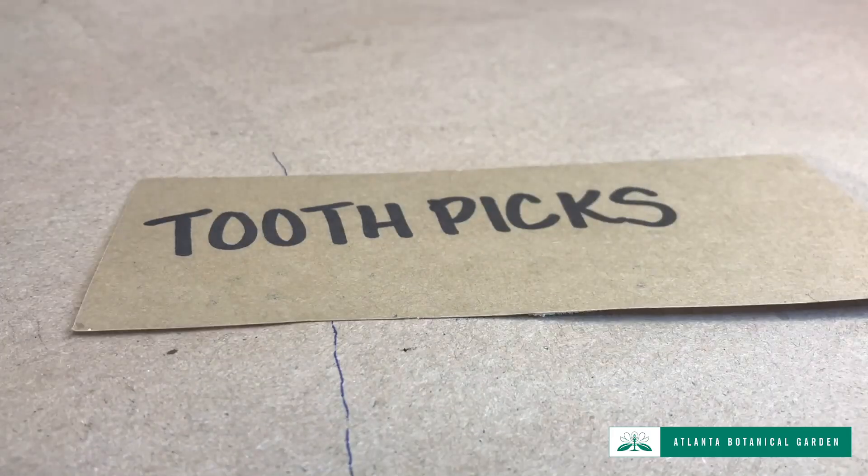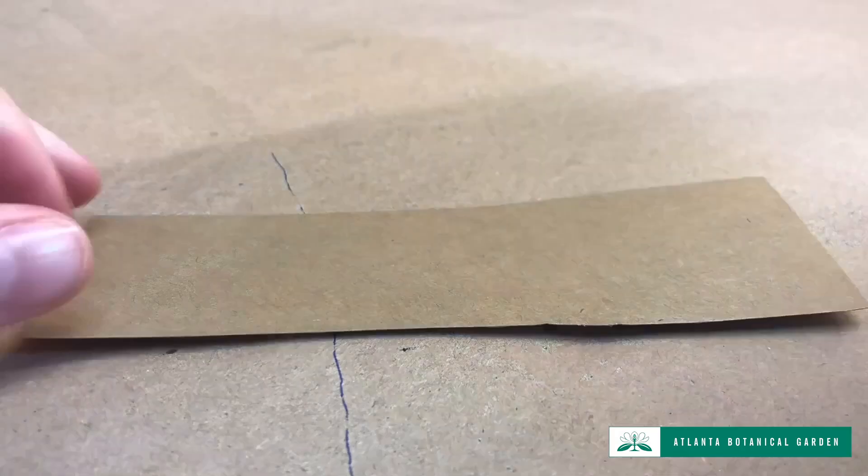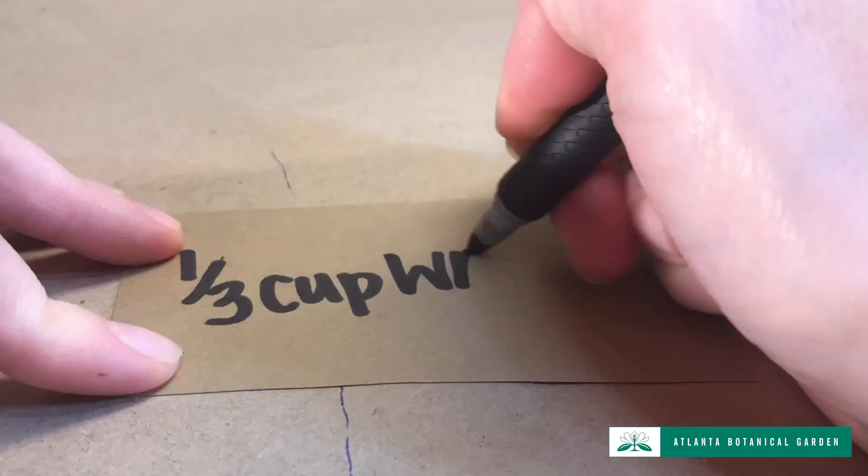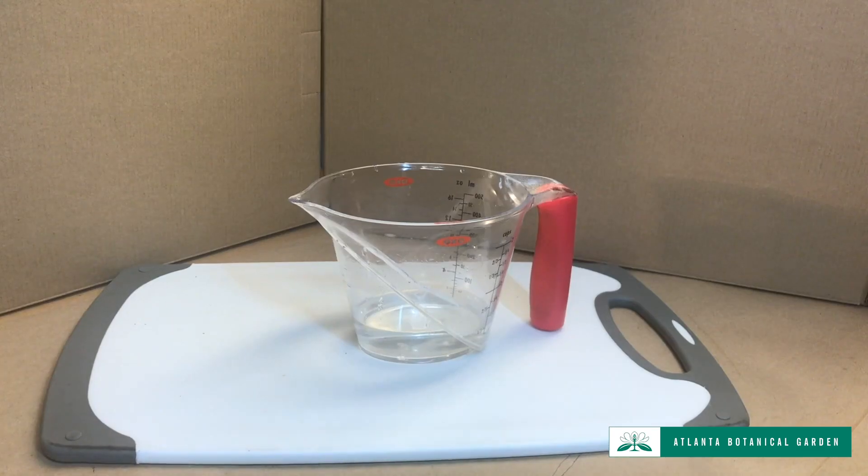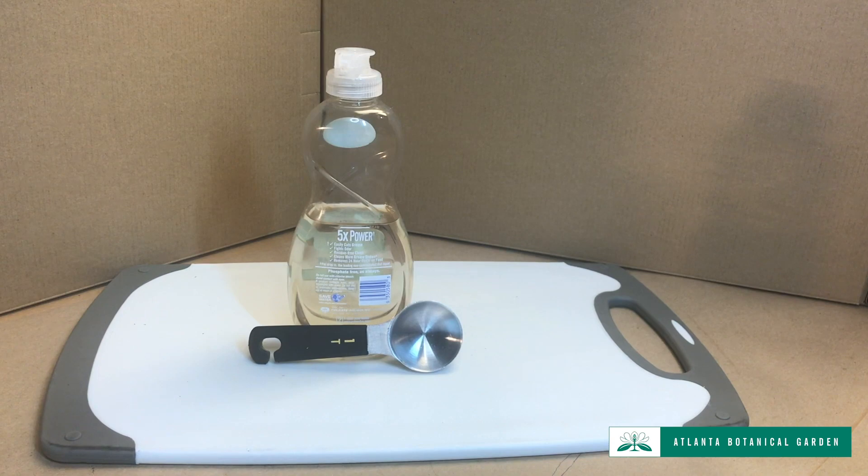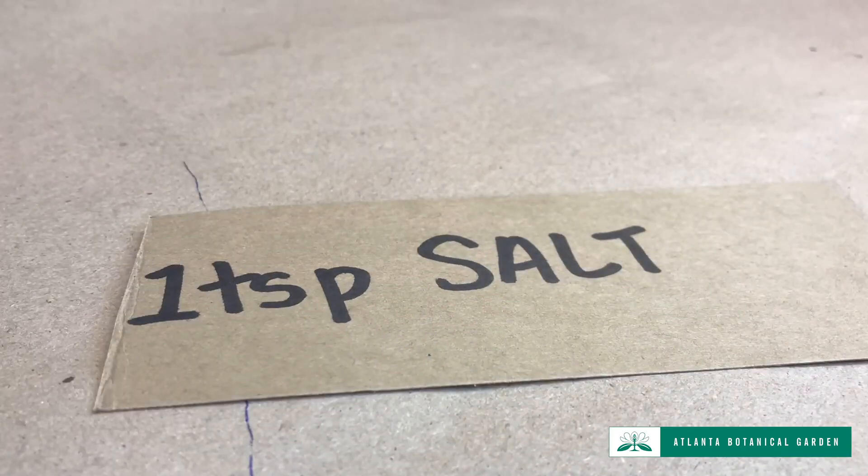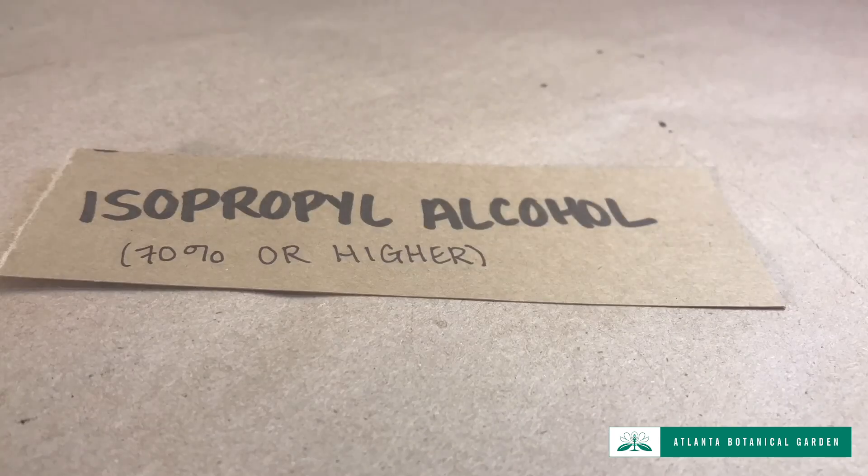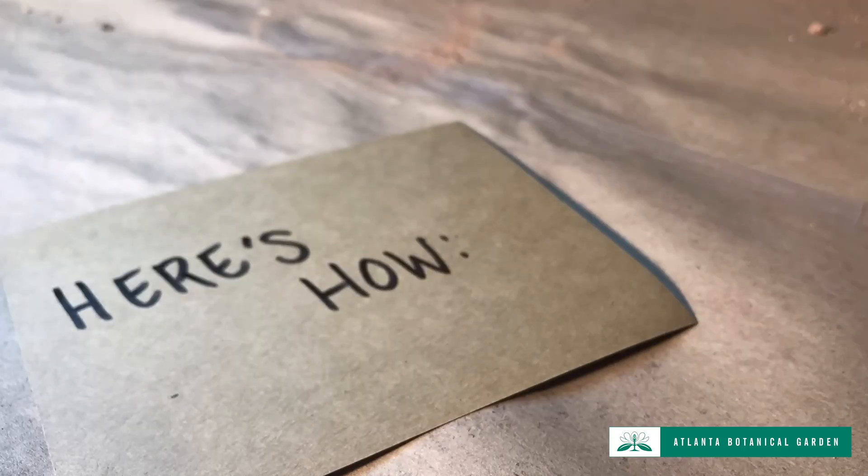Toothpicks. Three to four ripe strawberries. One third cup of water. One tablespoon of dish soap. One teaspoon of salt. Isopropyl alcohol, 70% or higher. Here's how.